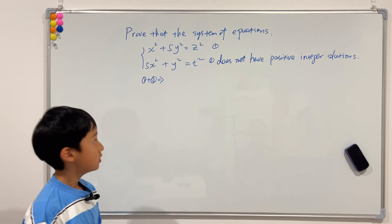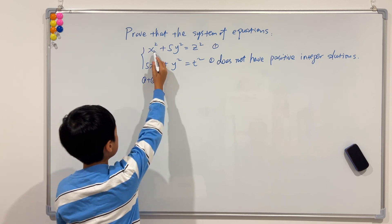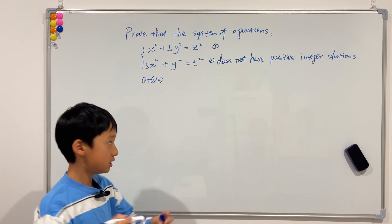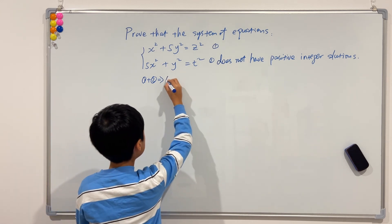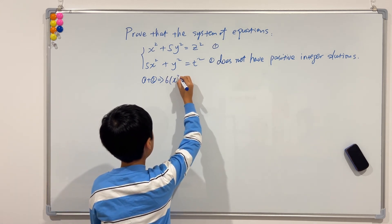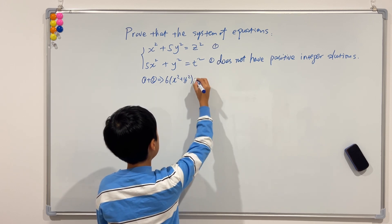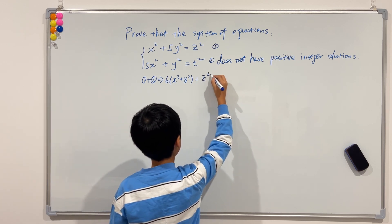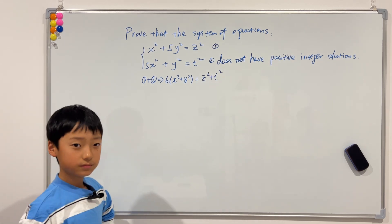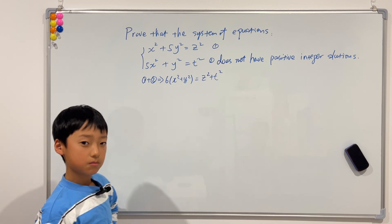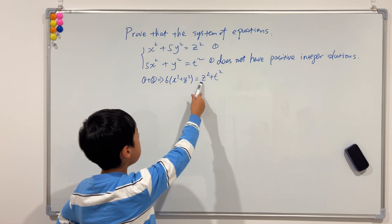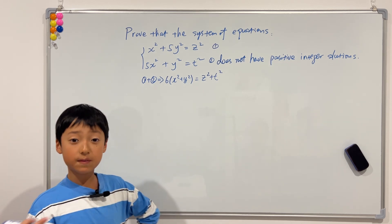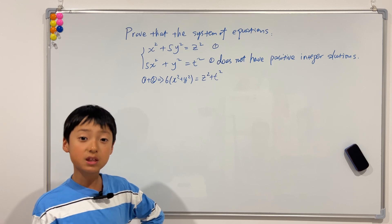The first thing we're going to do is add equations one and two. We get this plus this will be 6x², this plus this is 6y². If we factor out the six it'll be 6(x² + y²), and this equals z² + t².